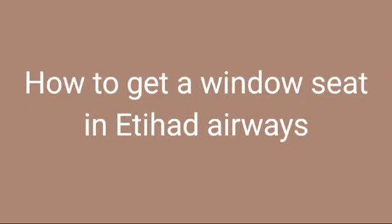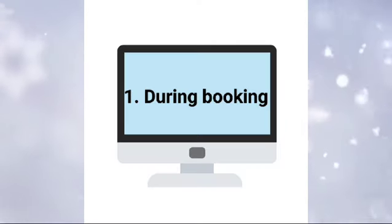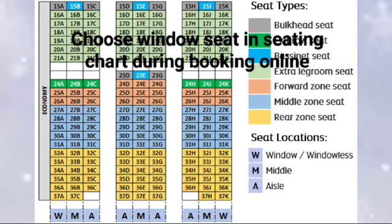How to get a window seat on an Etihad Airways flight, you can follow these steps. 1. During booking, when booking your ticket online through Etihad's website or app, look for the window seat in the seating chart.